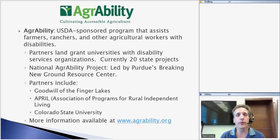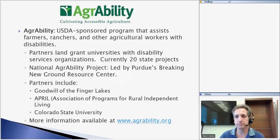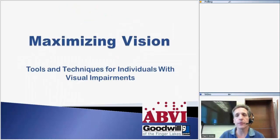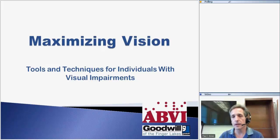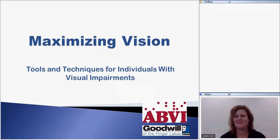Our partners on the national AgrAbility project include Goodwill of the Finger Lakes — our presenters today — APRIL, which is the Association of Programs for Rural Independent Living, and Colorado State University. If you'd like more information about AgrAbility, including a variety of resources, feel free to go to AgrAbility.org. I'm going to pass things over to Jo Beth Rath, who is one of our staff members on the AgrAbility project at Goodwill of the Finger Lakes, to begin the main presentation.